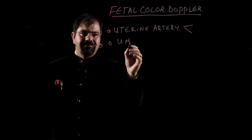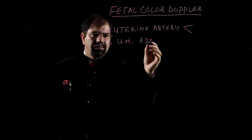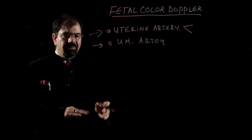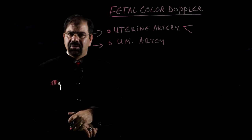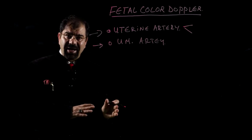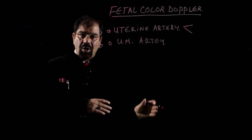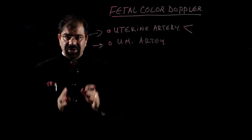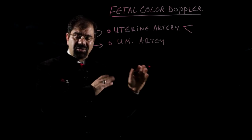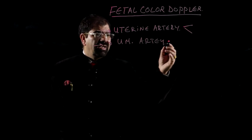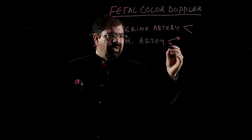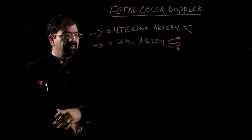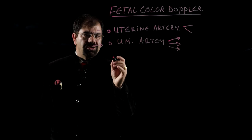Then, the umbilical artery — how to get the umbilical artery, what is normal, and what is abnormal. We will also cover what is normal for the first trimester, second trimester, and third trimester, because the flow changes from first to third trimester in the umbilical artery.